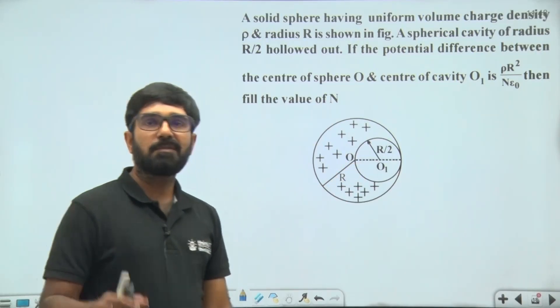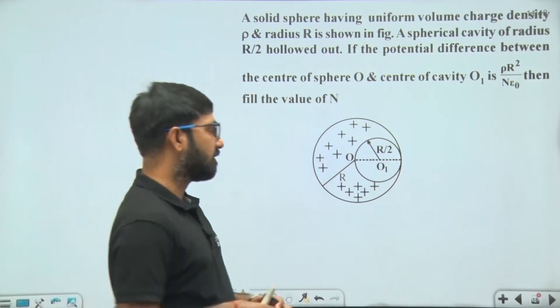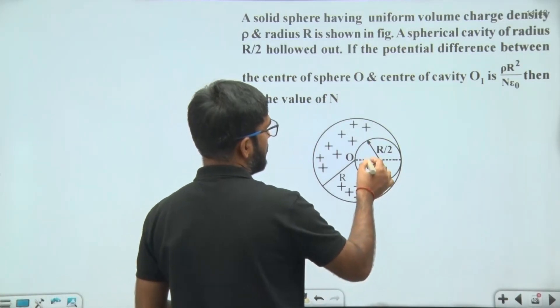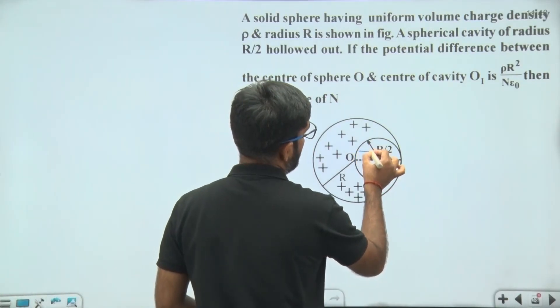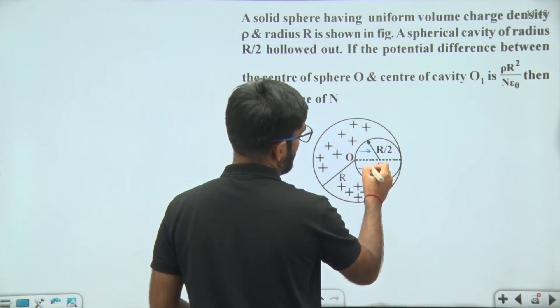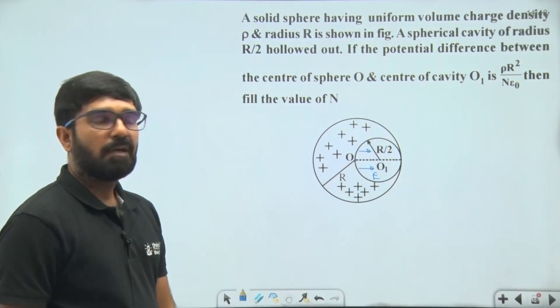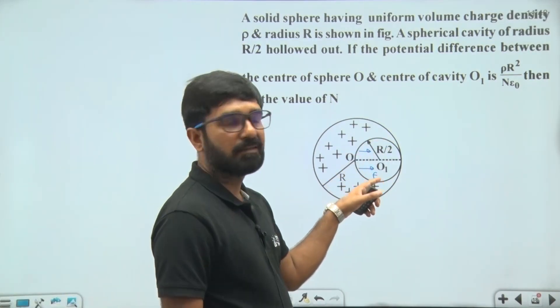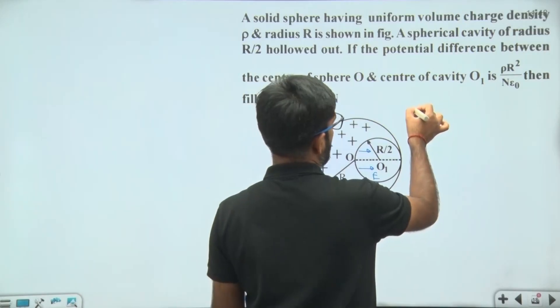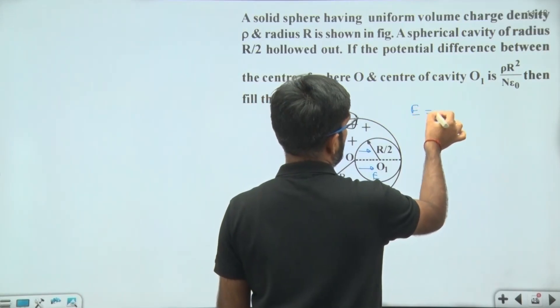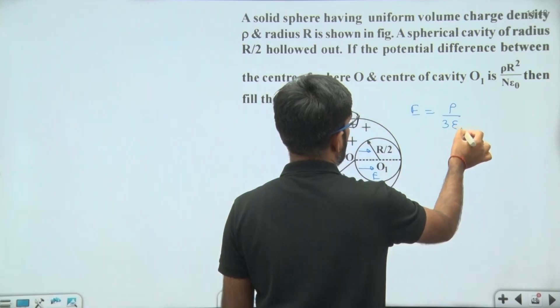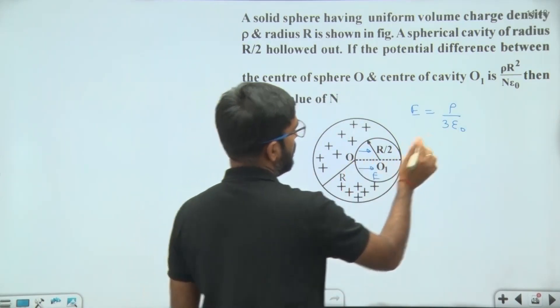We know that if volume charge density is uniform then electric field inside the cavity will be uniform and its direction is from O to O1 like this. This is the direction of electric field and this is uniform field inside the cavity and its value is given by E equal to rho upon 3 epsilon 0 into this distance OO1.